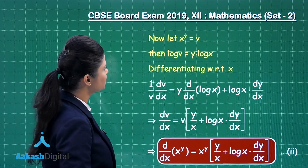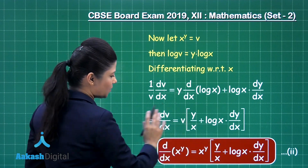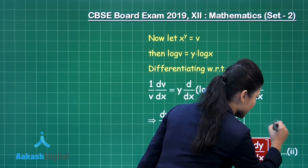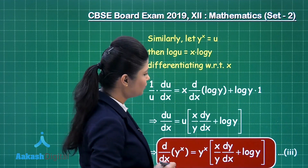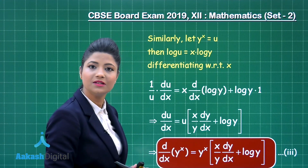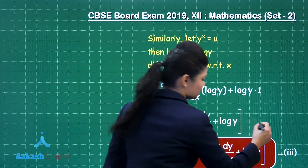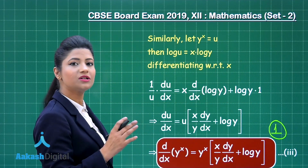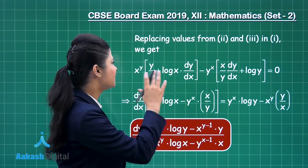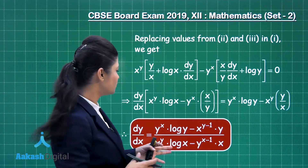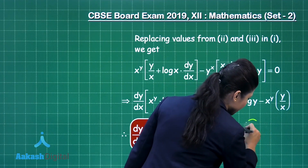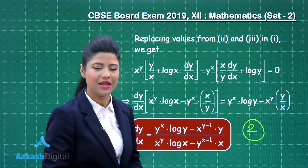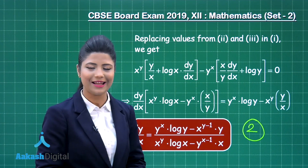When solving this question, obtaining equation 2 — the differentiation of x^y — gives 1 mark. Obtaining equation 3 — the differentiation of y^x — gives another 1 mark. Substituting equations 2 and 3 into equation 1 and simplifying to get dy/dx gives 2 marks. So 1 plus 1 plus 2 gives a total of 4 marks for this question. Now let us proceed to our next question.